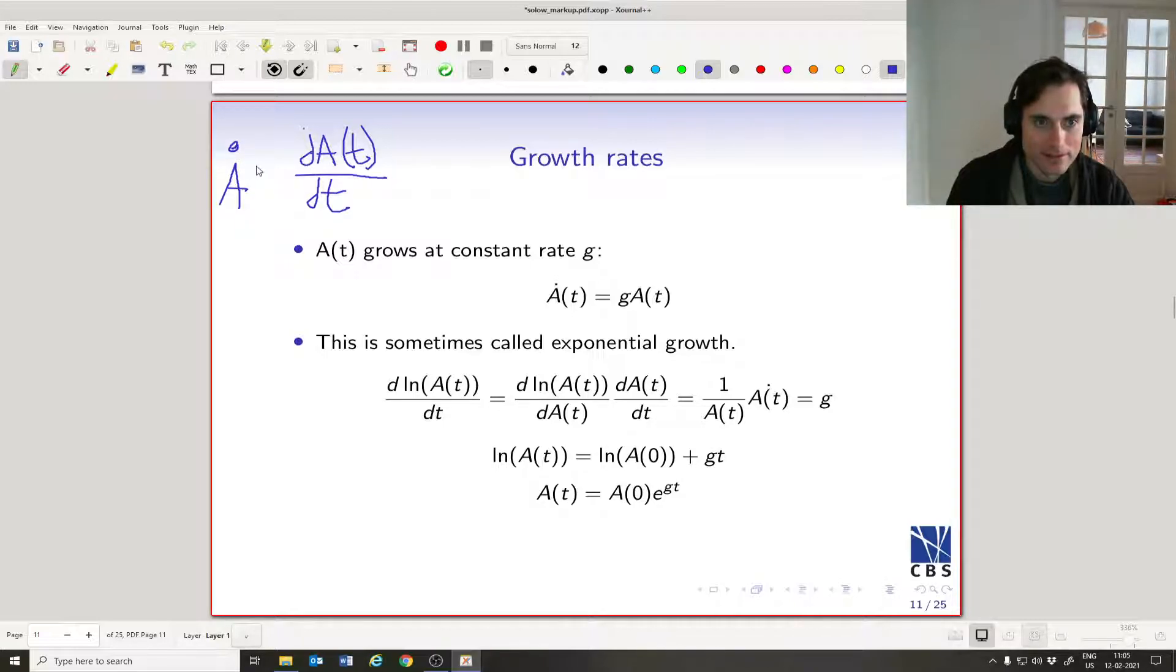A-dot(t) is defined to equal the derivative of A with respect to t. So what we're saying here is that the derivative of A with respect to t is going to be g times A(t), right? So if you think about it, in some senses, it's like a percentage growth. The bigger is A, the more A we get when we have a g fraction of A or a g times A. And sometimes that's called exponential growth. And I'll show you why.